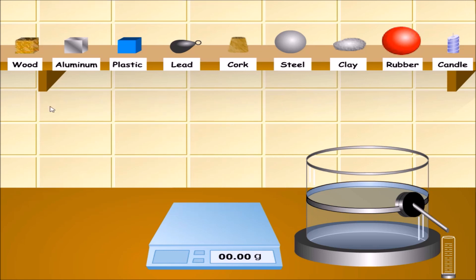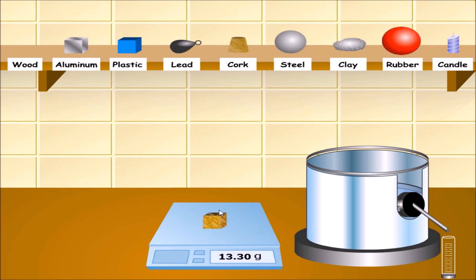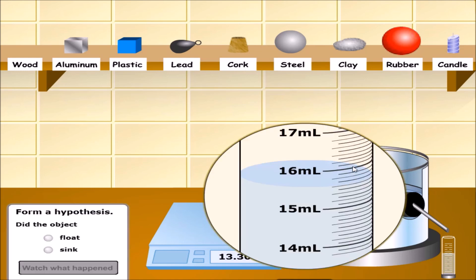Let's check the materials here if it is going to float or if it is going to sink. Let's start with wood. The wood has 13.3 grams. If I put it in water, the wood displaces 15.6 ml of water. In this experiment, we will assume that 1 ml of water is equal to 1 gram of water.